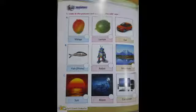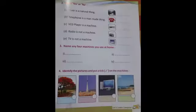Now question number 2: write yes or no. You have to write yes or no after reading the sentence. River is a natural thing. You know that natural things are those things which are made by nature. So river is a natural thing, yes. So you will write yes here.